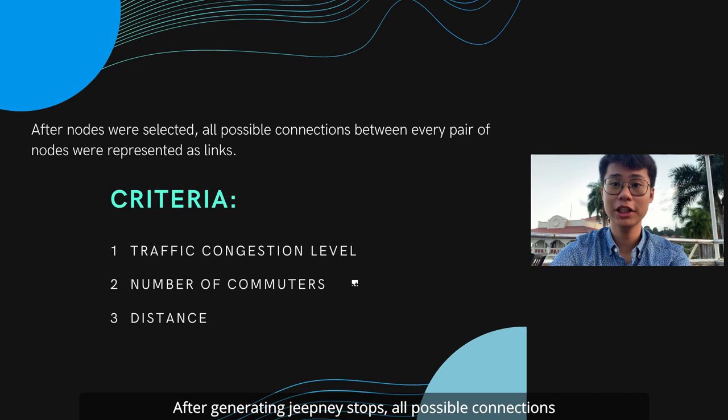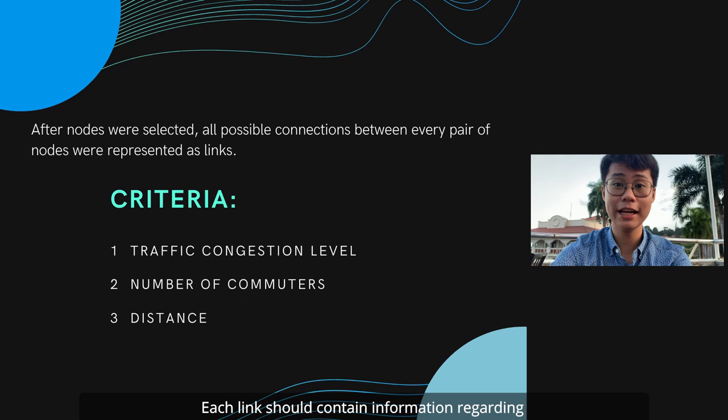After generating jeepney stops, all possible connections between every pair of nodes were represented as links. Each link should contain information regarding traffic congestion level, number of commuters, and distance.